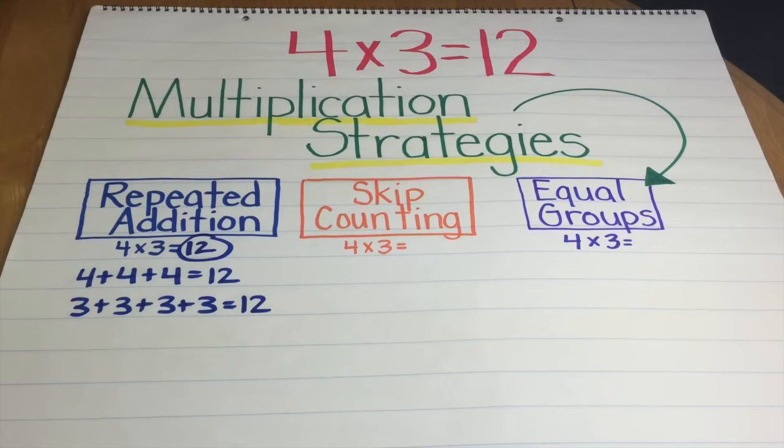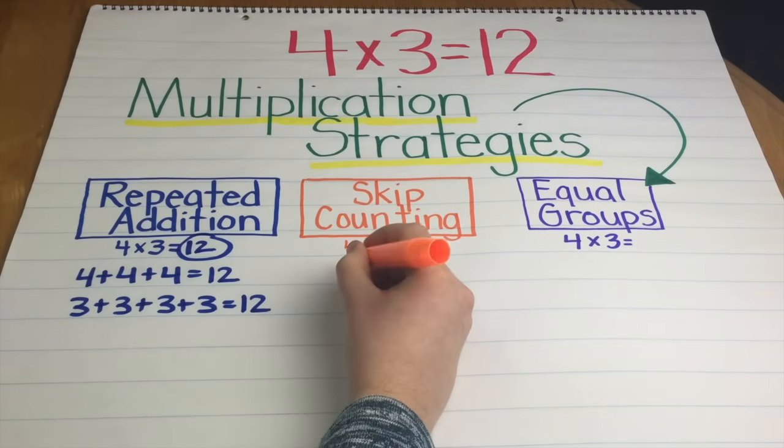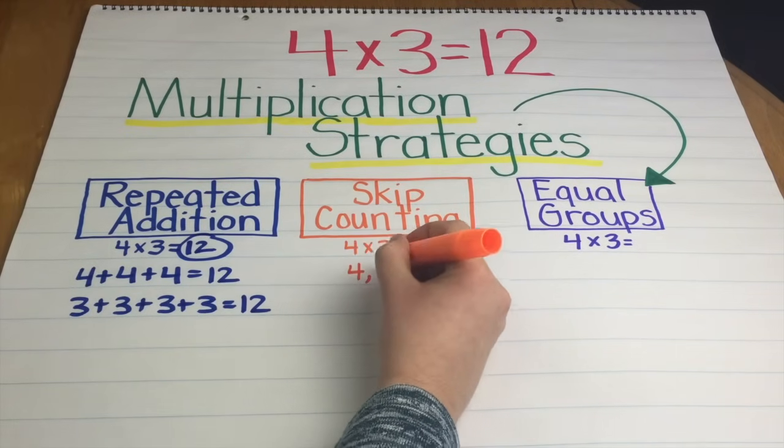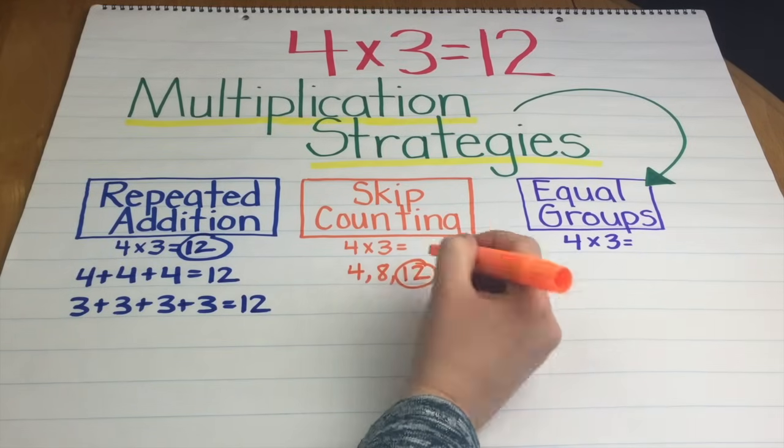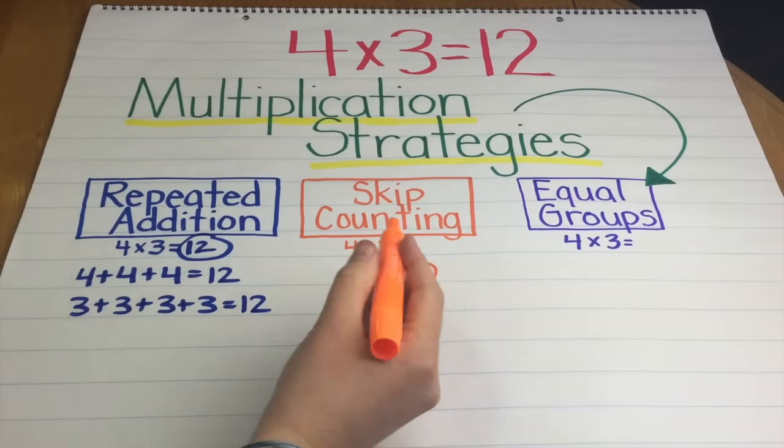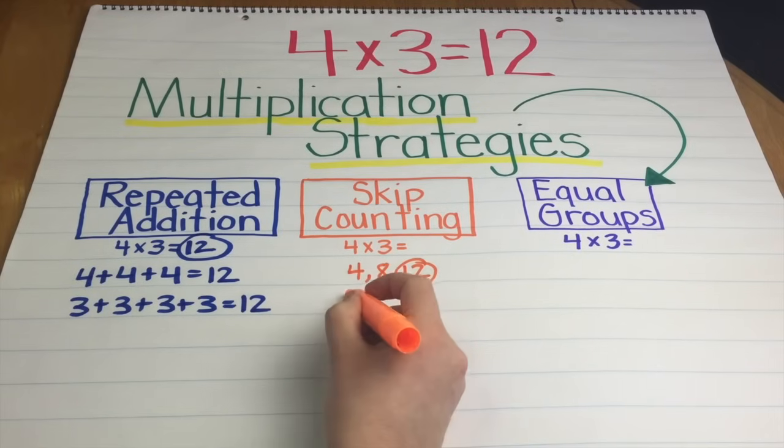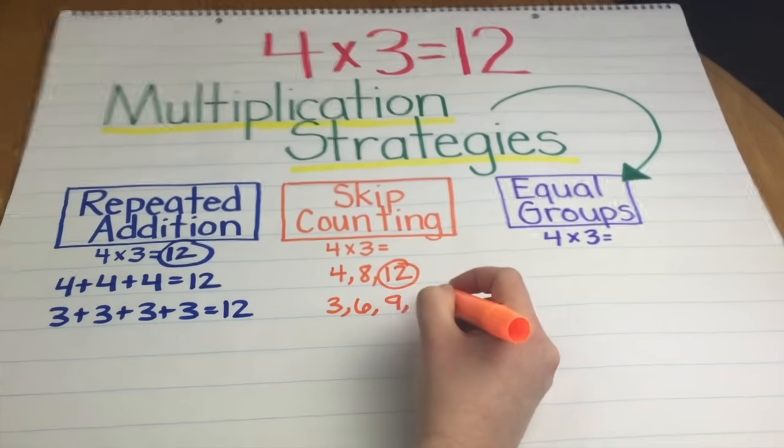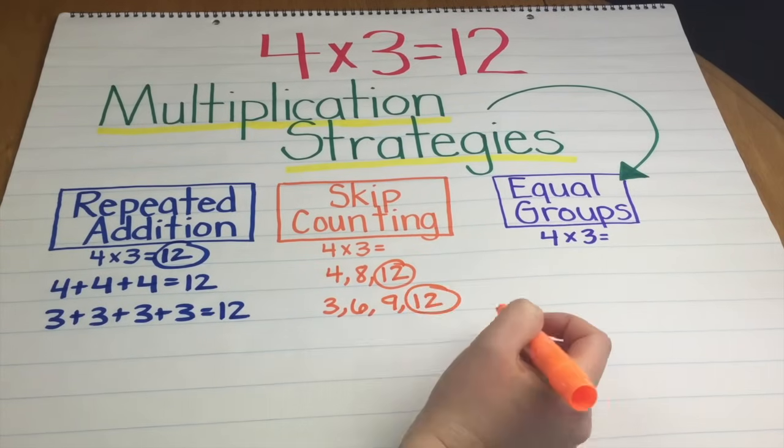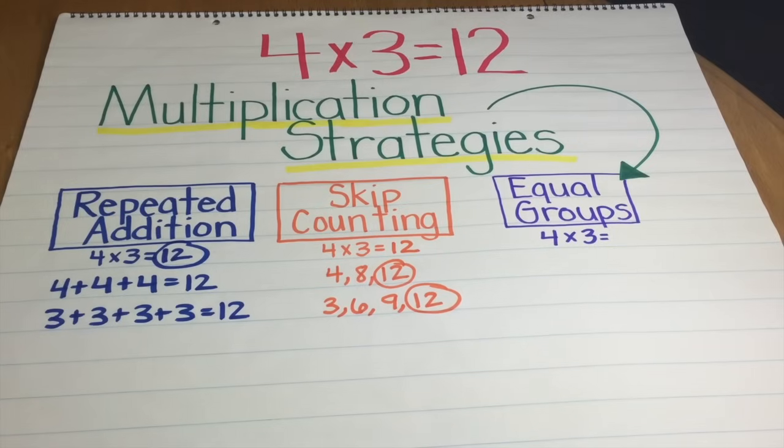Another strategy I use for teaching multiplication is the skip counting strategy. So again taking the multiplication problem of 4 times 3, I can take the number 4 and skip count by 4 three times: 4, 8, 12. There is my answer of 12. Or I can take the number 3 and skip count four times: 3, 6, 9, 12 and there is my answer. So 4 times 3 is 12.